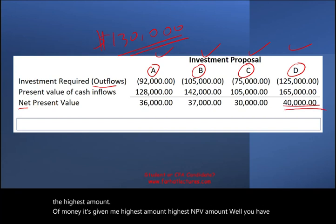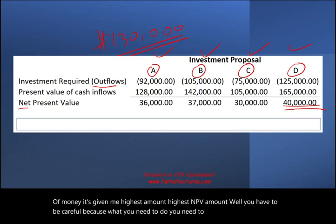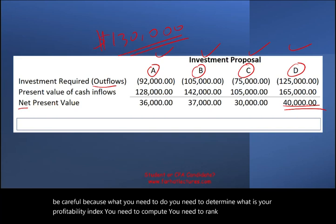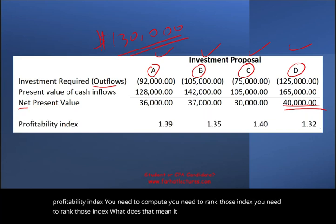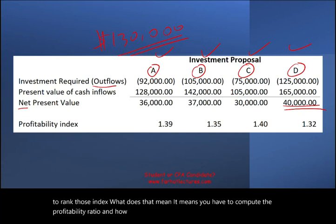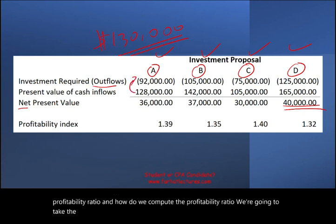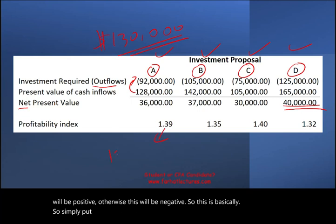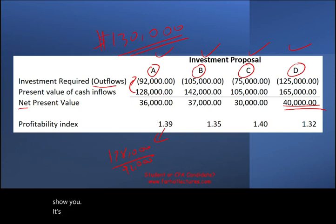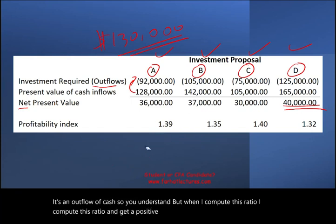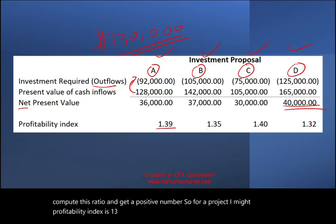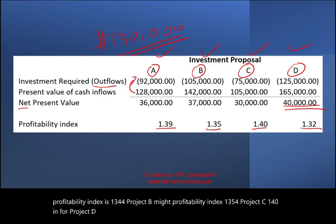What you need to do is compute and rank the profitability index for each project. We take the present value of inflows divided by the present value of outflows — using the positive value of the outflow. For project A the profitability index is 1.34, for project B it is 1.35, for project C it is 1.40, and for project D it is 1.32.